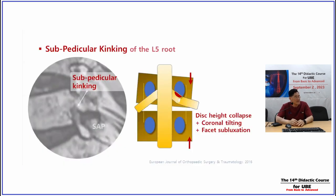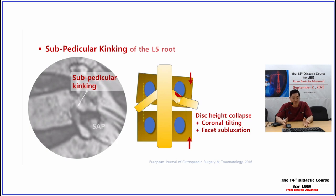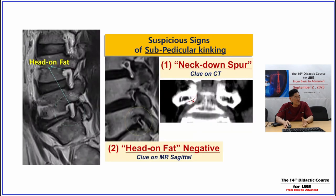One reason is subtle thinking — it is a hidden pathology. SAP is one of the dynamic pathologies. Sometimes it causes symptoms, sometimes it does not, depending on the patient's posture. Subarticular clinging is also a dynamic factor — sometimes it causes pain and sometimes it looks fine. Everybody knows there is subarticular clinging, but what is pedicular clinging? What is the radiological clue for suspecting pedicular clinging? There is no documentation, so I will share my experience.